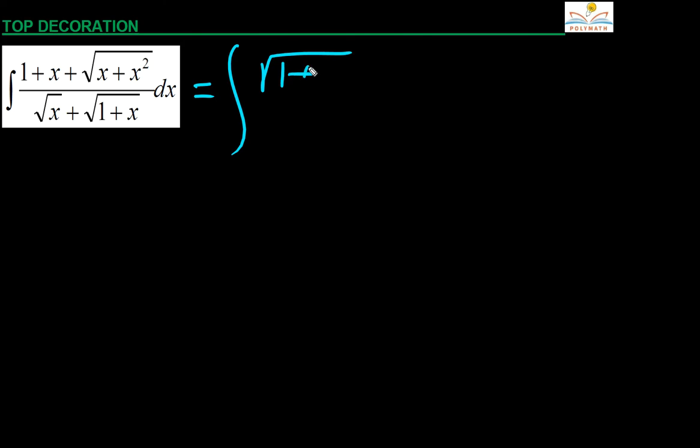You write the numerator as root over 1 plus x whole square. In this term, take x common, and thereby you will get 1 plus x whole divided by root x plus root 1 plus x dx.